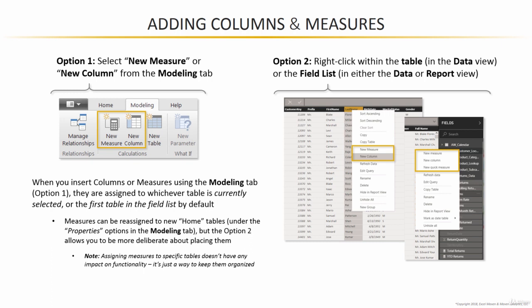For instance, measures that are related to sales would likely go into our sales data table, whereas calculated columns related to customers might live in our customer lookup table. It's purely an organizational tool — no impact on actual functionality.